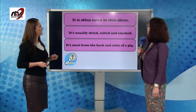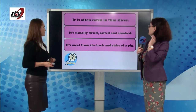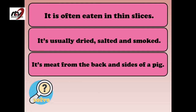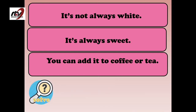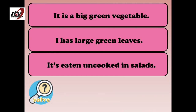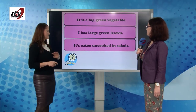It is often eaten in very thin slices. It's usually dried, salted and smoked. It's meat from the back side of the pig, which means it's bacon. Next: it's not always white, but it's always sweet. You can add it to coffee or tea. It's sugar. Next: it is a big green vegetable. It has large green leaves and it's eaten uncooked in salads. We've talked about it — it's the lettuce.